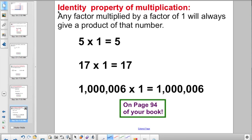And, the last one I'm going to talk about is called the identity property of multiplication. Most kindergarteners are already cognizant of this. Any factor multiplied by a factor of one will always give a product of that number. If you go five times one, well, the answer would be five. Seventeen times one, your product is going to be seventeen. A million six times one, well, your product is going to be a million six. That is also on page ninety-four of your book.